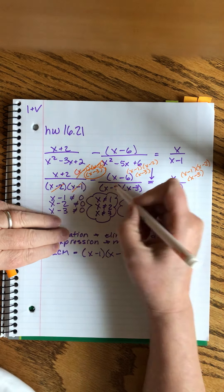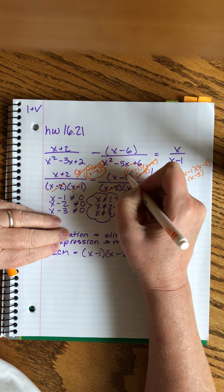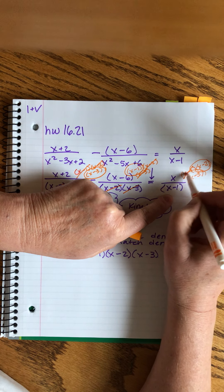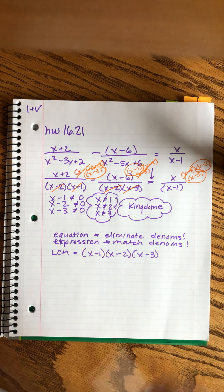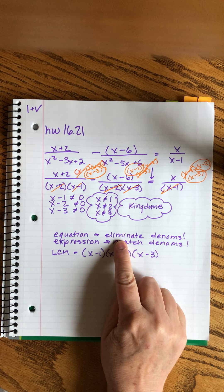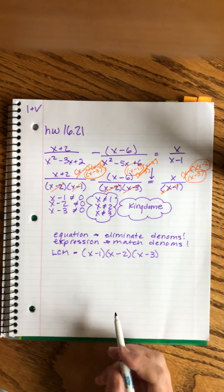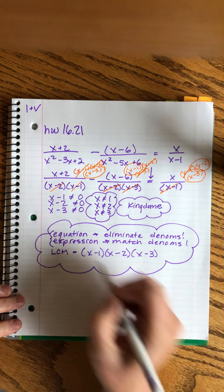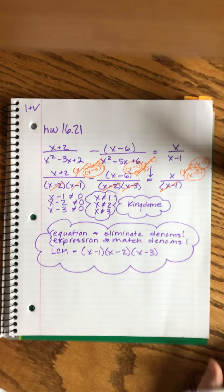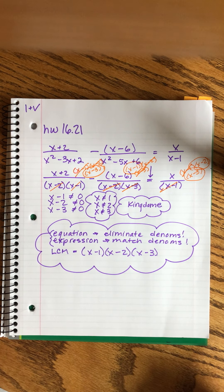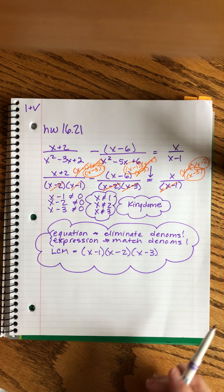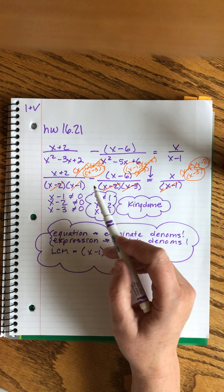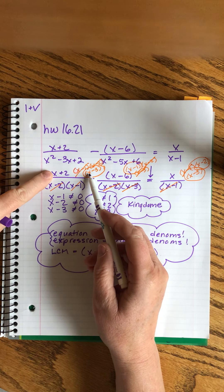Our denominators are all canceled — we eliminated them completely. This LCM step is super important: for either strategy, we have to find the LCM. Now we have to multiply the numerator by whatever was left behind of the LCM. So for the first one it's going to be (x + 2)(x − 3). This minus sign is still here — (x − 6)(x − 1). When we're talking math, we refer to this as a quantity, so this is (x − 6) quantity times (x − 1) quantity.